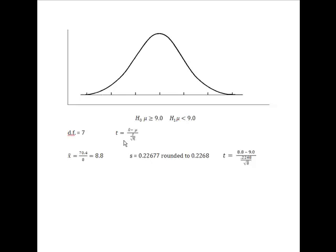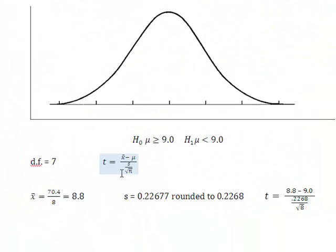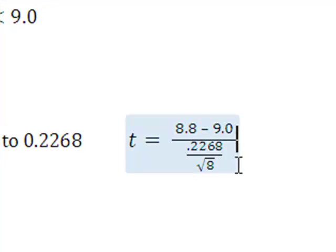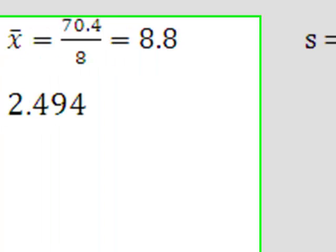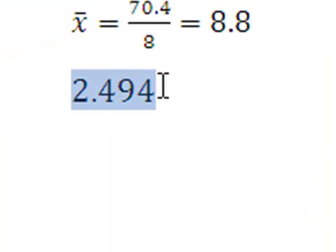So now I've come back here, back up here to my T, and I've simply dropped my values in. 8.8, which is the calculated sample mean, minus 9, which is the mean of the entire population, which was given in the problem. 0.2268, which was my calculated value for S, the standard deviation, divided by the square root of 8. What that ends up giving me is it ends up giving me a T value of negative 2.494. And this negative 2.494 is what I'm going to head into the table and look up right now.